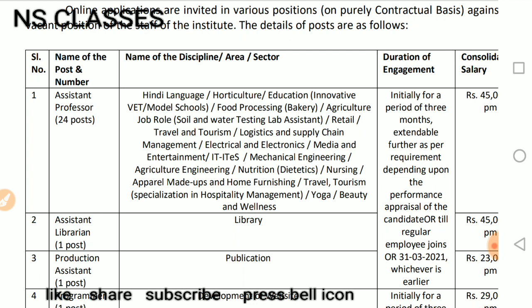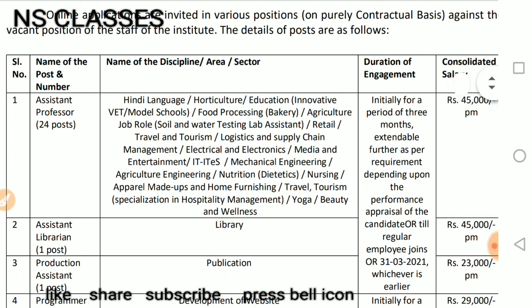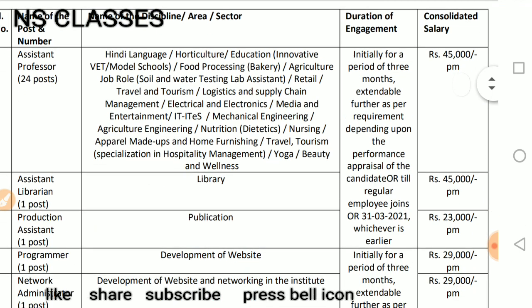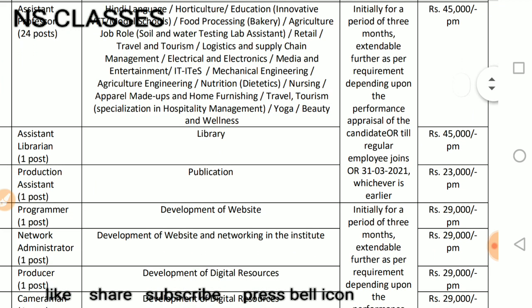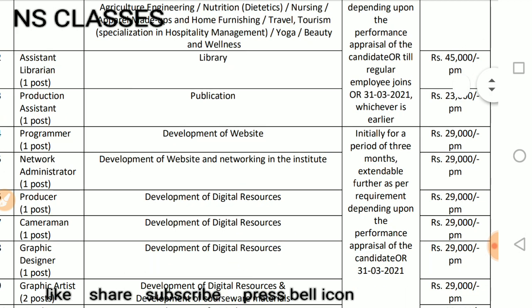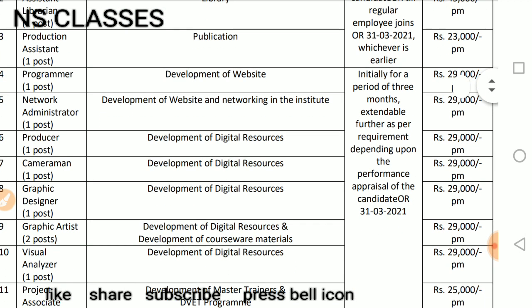All your 24 posts are different — yoga, beauty, travel and tourism. So here, the salary: I have told you that it will be fixed — 45,000. The engagement period is until 31st March 2021, and it is extendable depending on your performance. In the library, there are 45,000. Publications are 23,000. Development of Website is 29,000. Development of Website and Networking Institute is 29,000 — the salary.